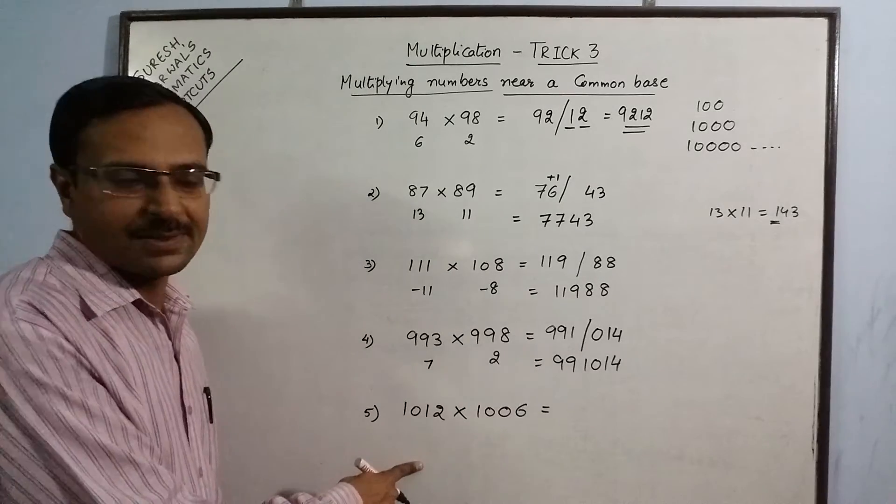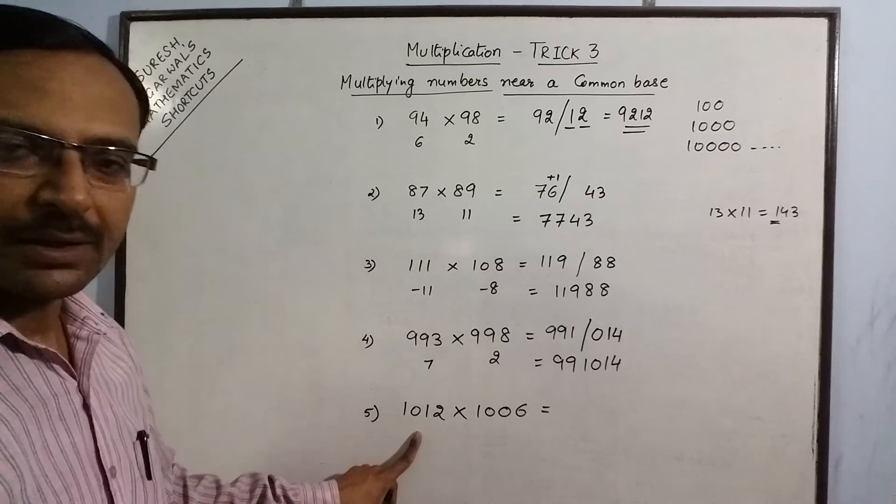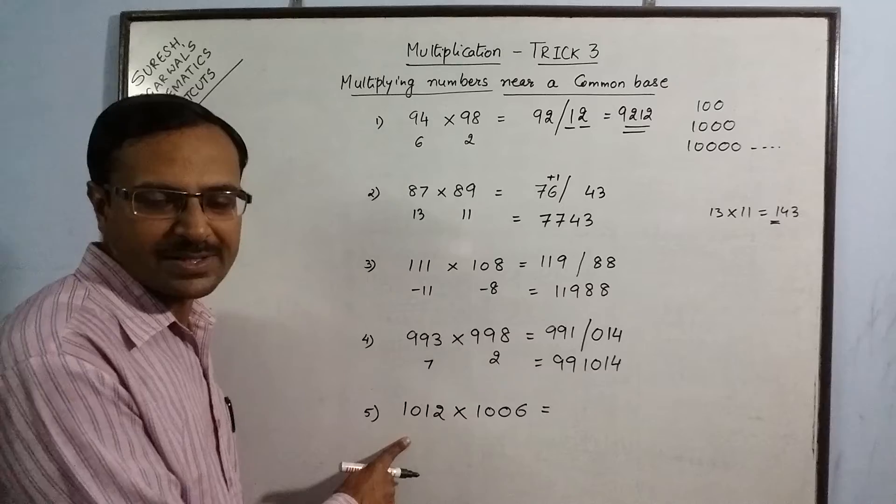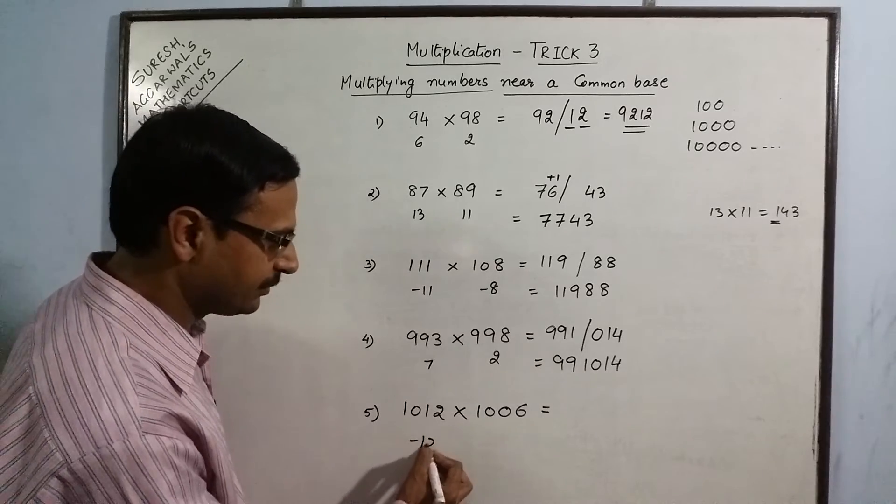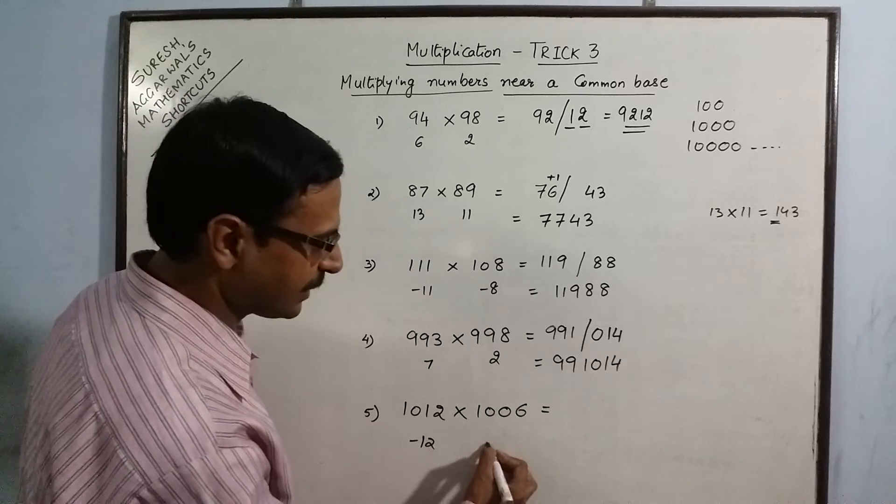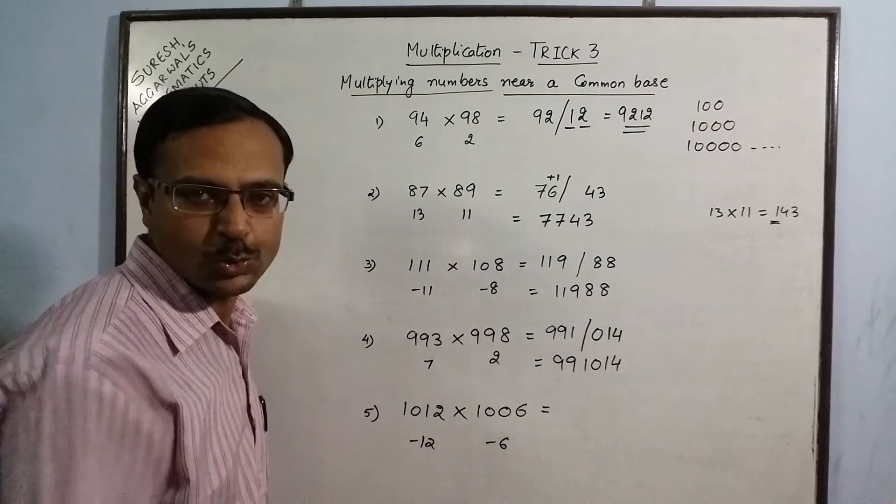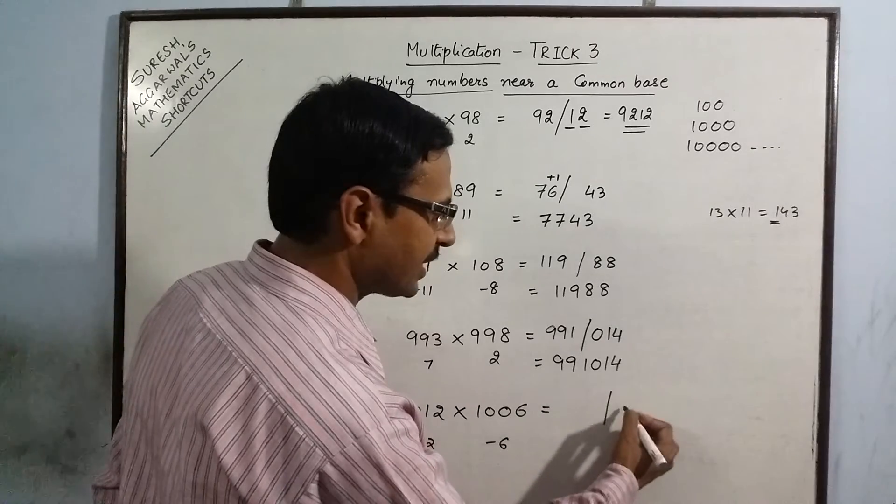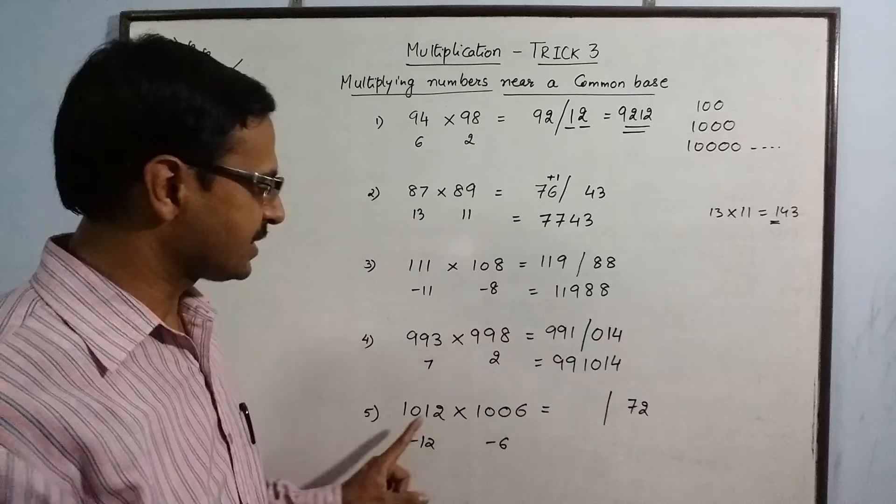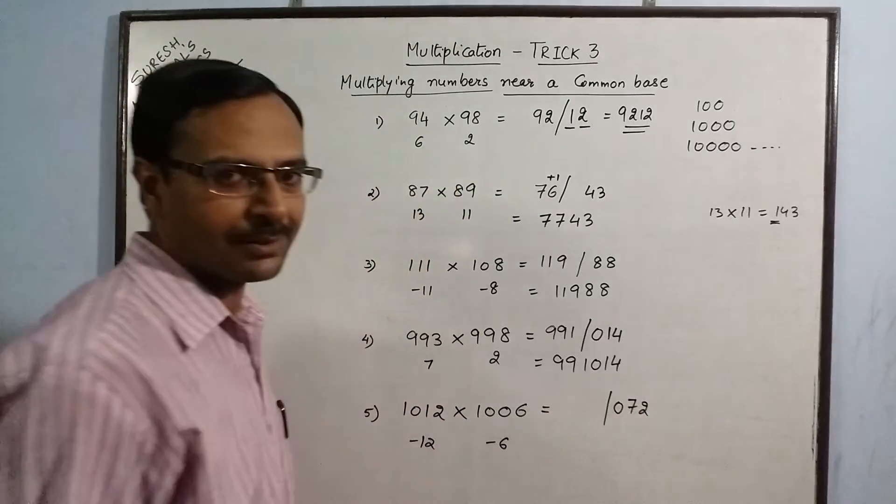Final example in this series. Again, the two quantities are near 1000. 1000 minus 1012 gives us minus 12. 1000 minus 1006 gives us minus 6. 12 into 6 is 72, so the second part of the answer is 72. But, we need to have 3 digits because the base quantity contains 3 zeros. So, we need to prefix 0 here.